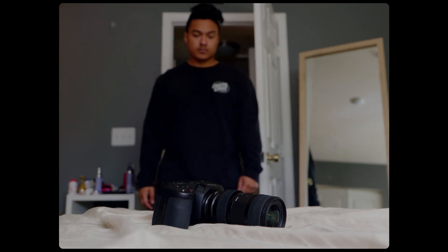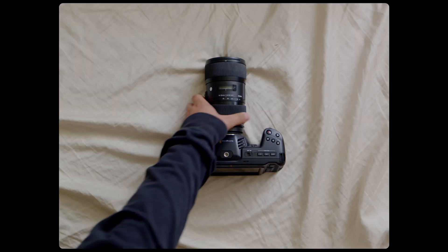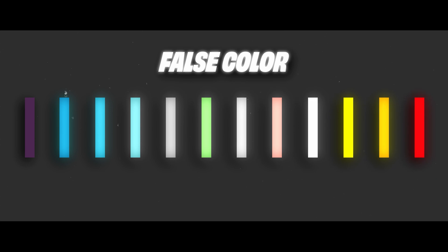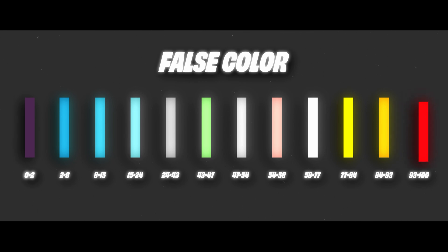Cameras have come a long way over the years and they've armed us with some useful tools we can use. Today we're going to talk about false color. False color is a scale we can follow to get correct exposure quickly. IRE shows us the values starting from zero, being completely black with no detail, and anything above 100 will be clipped and white with no detail. The scale is broken down into a couple of different colors.